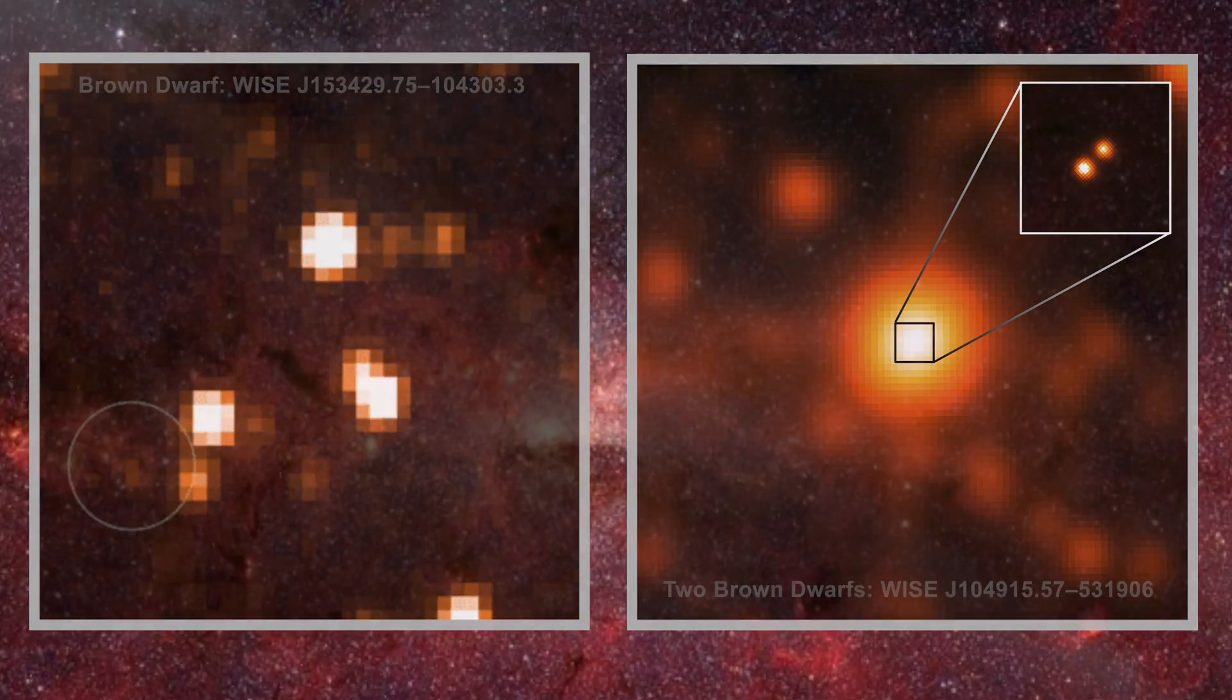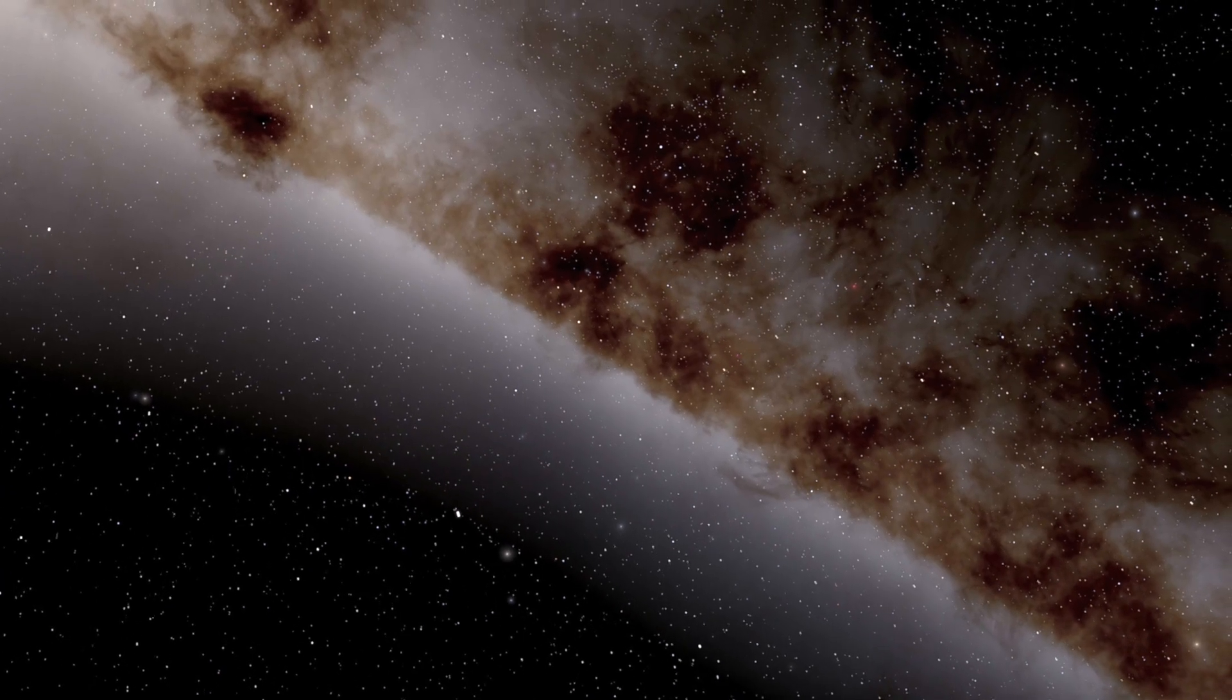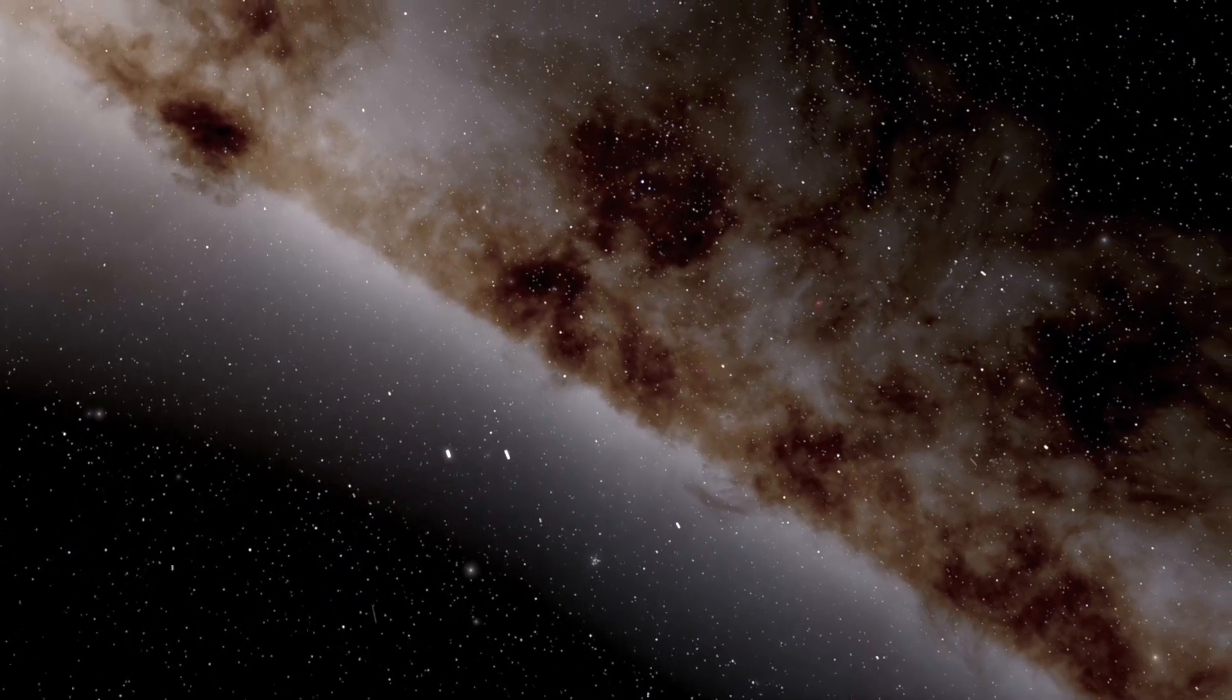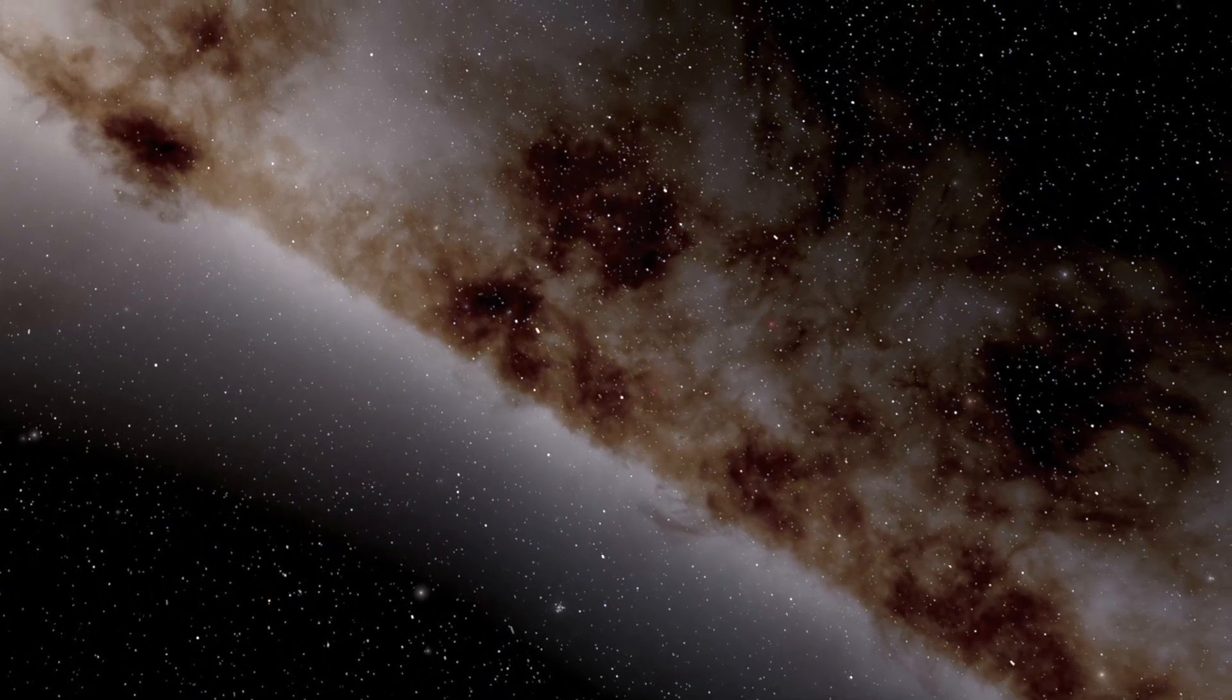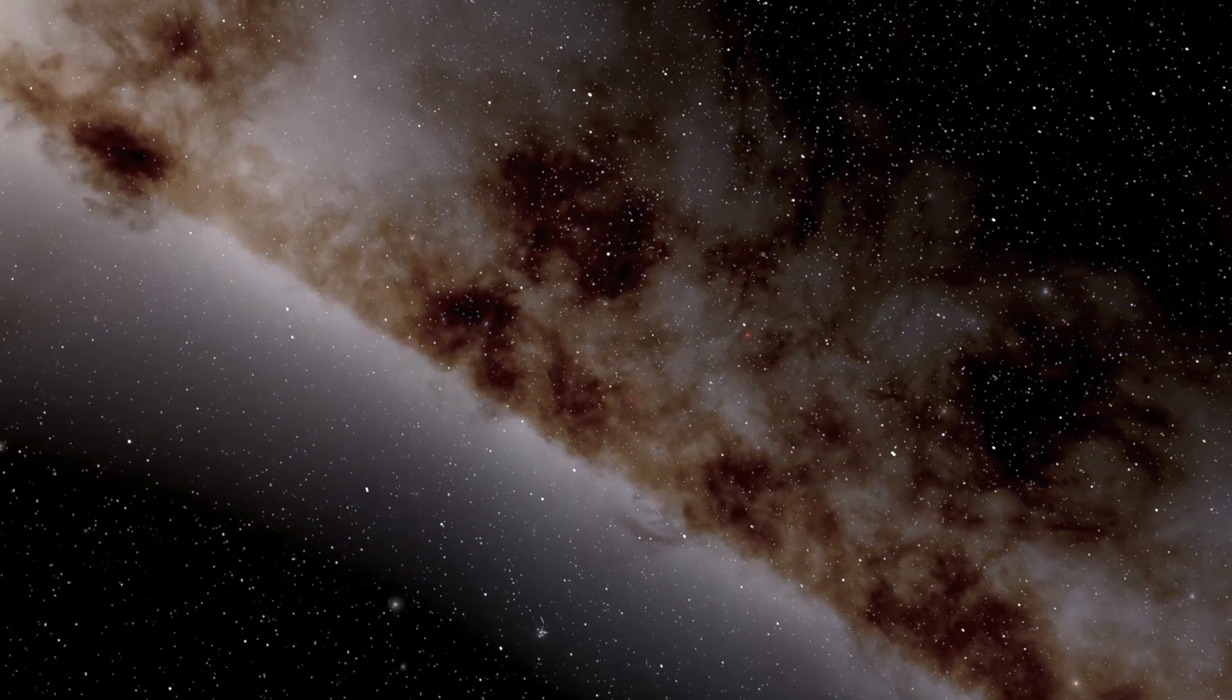But the data came back empty. No red dwarf, no brown dwarf, no hidden star within 26,000 astronomical units from the Sun. For all intents and purposes, Nemesis was not there.